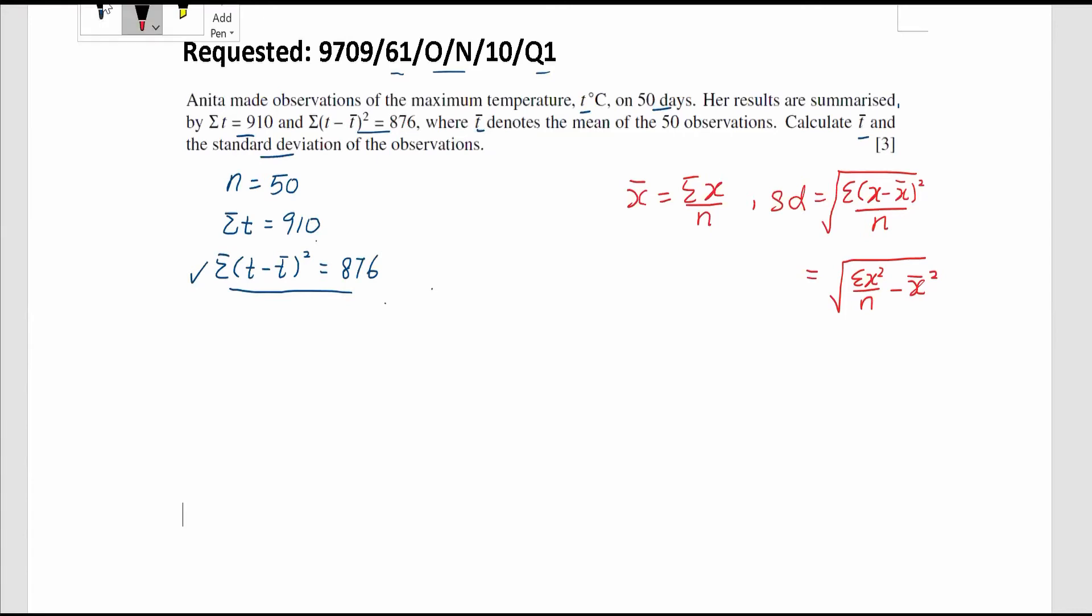So, in order to answer the question now, first, we are going to find out the t bar, which is the mean of the 50 observations. According to the general formula, it means we are going to use the sum of t divided by n. And hence, according to the info given, we have this and this. To find out the mean is going to be 910 divided by 50. And using calculator, we can get the value to be 18.2. So the mean is found.